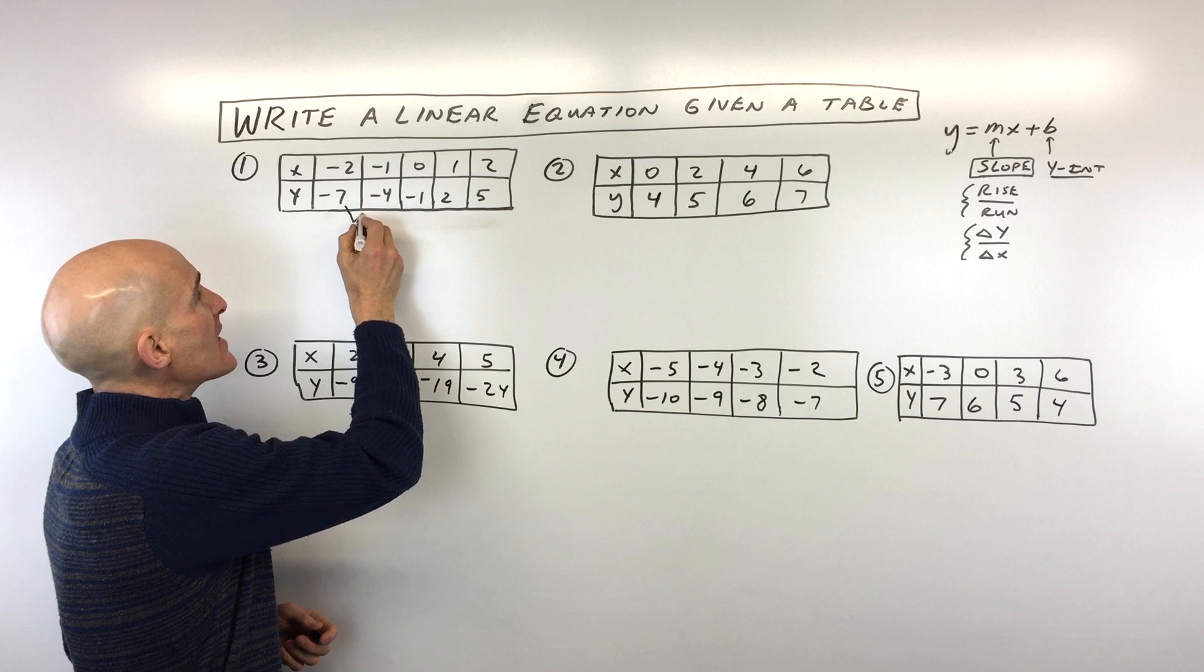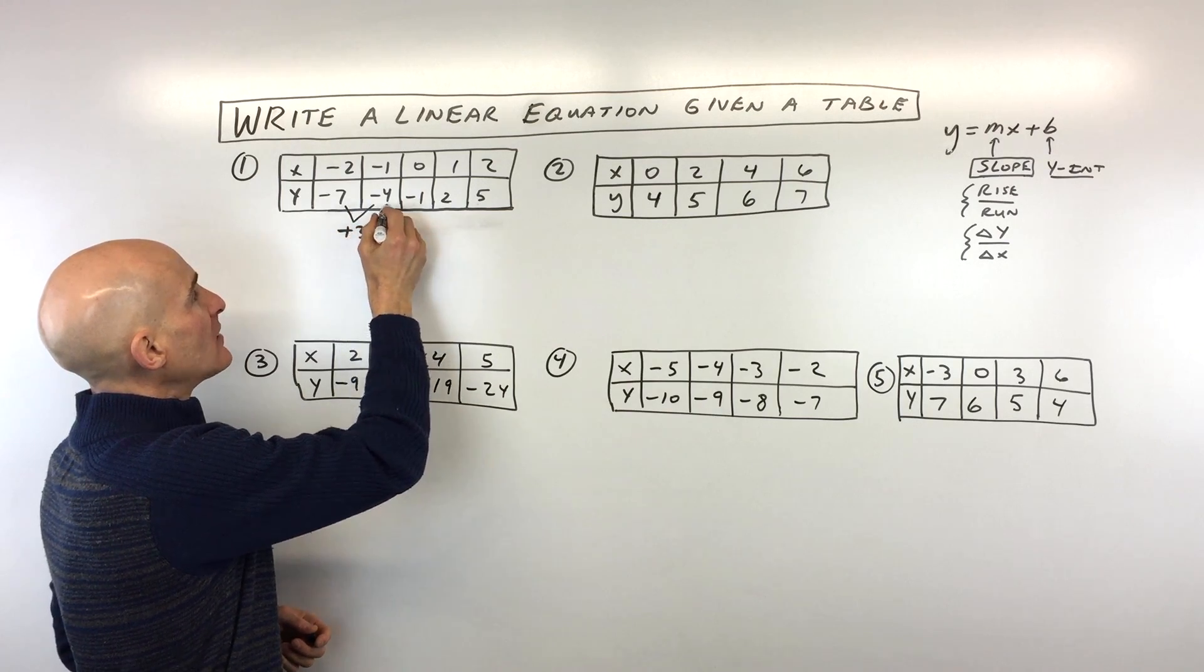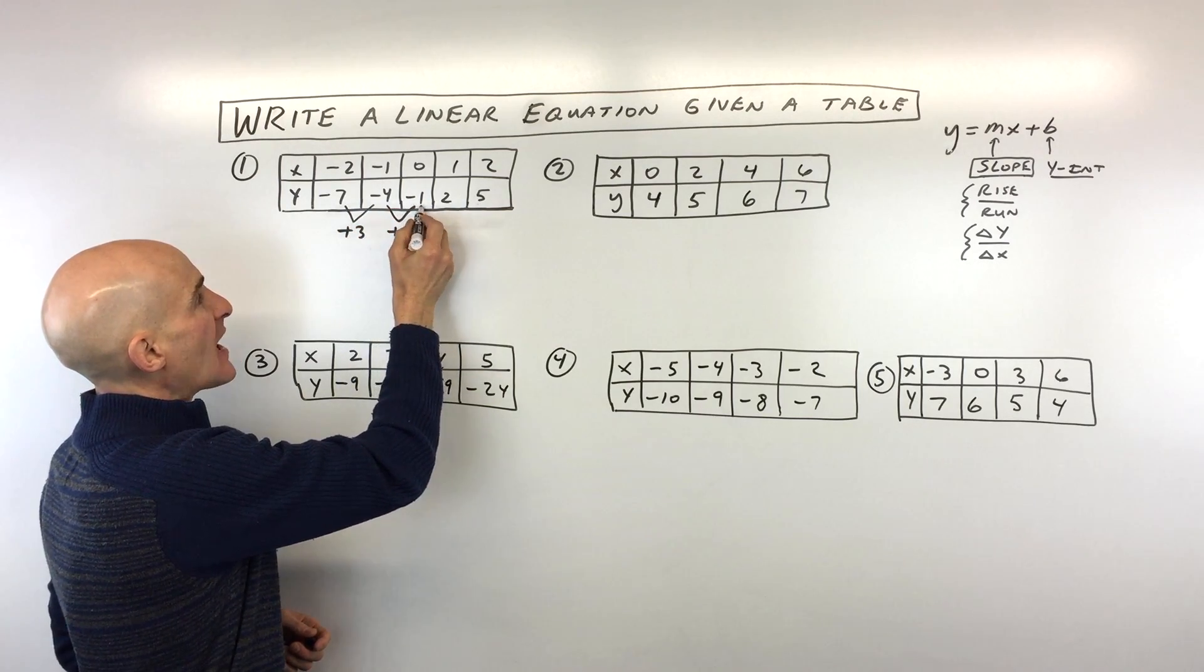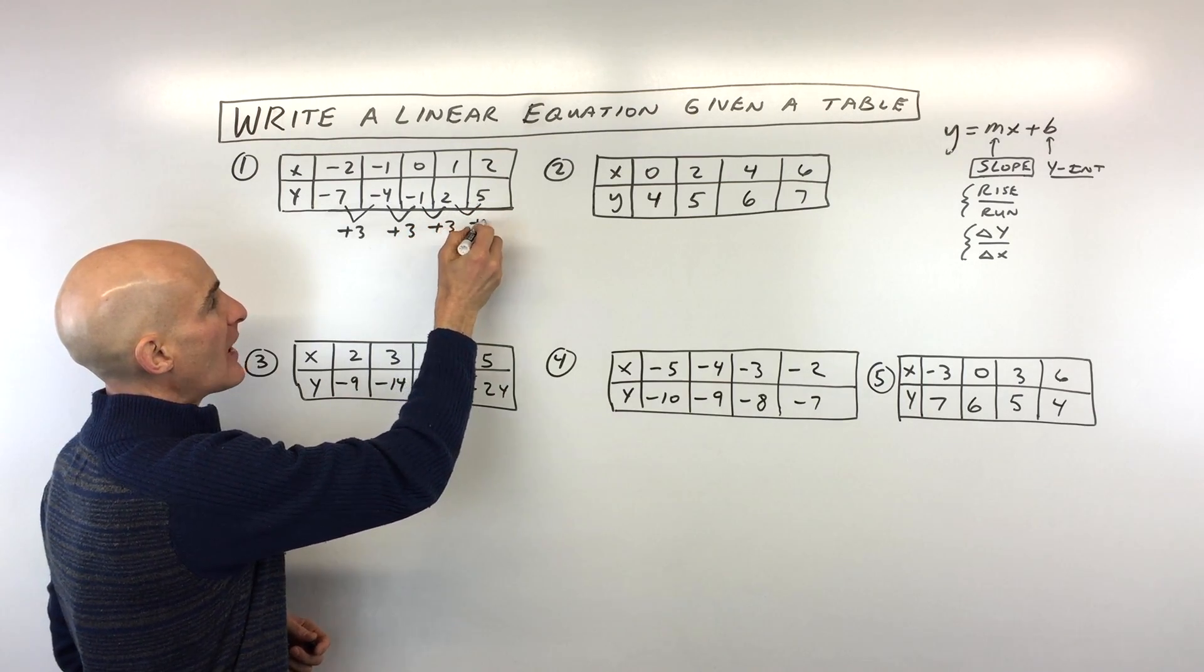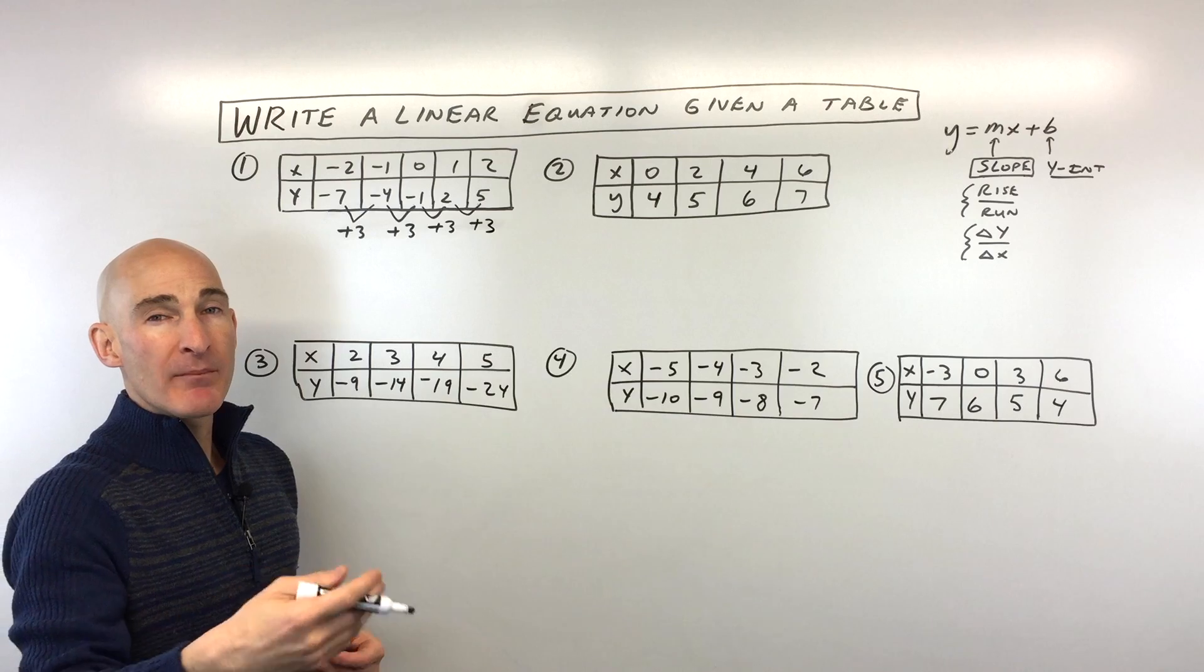Well, it looks like the y's are going up by 3, up by 3. See, how am I getting from negative 1 to 2? I'm adding 3. How am I getting from 2 to 5? I'm adding 3. So the y's are going up by 3 each time.